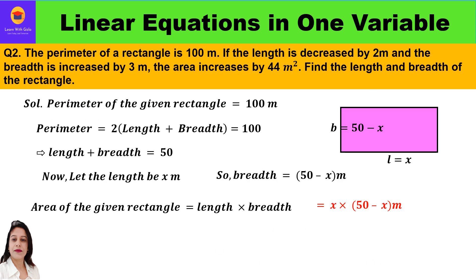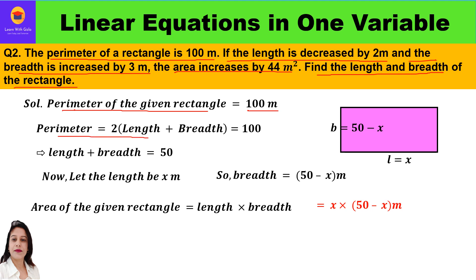Now let us take one more question — an extra question added to this video. The perimeter of a rectangle is 100 meters. If the length is decreased by 2 meters and the breadth is increased by 3 meters, the area increases by 44 meter square. Find the length and breadth of the rectangle. Neither the length nor the breadth is given. Only the perimeter of the given rectangle is 100 meters, so we shall start with the perimeter: 2(length + breadth) = 100, giving us length + breadth = 50 meters.